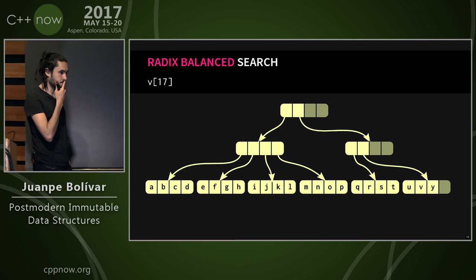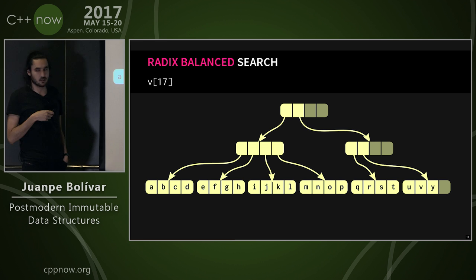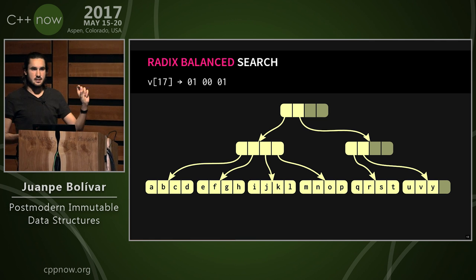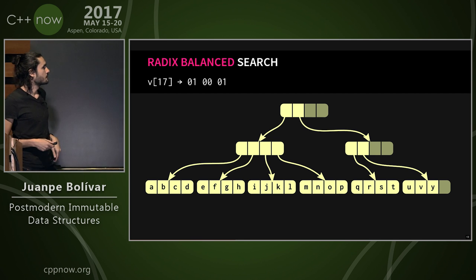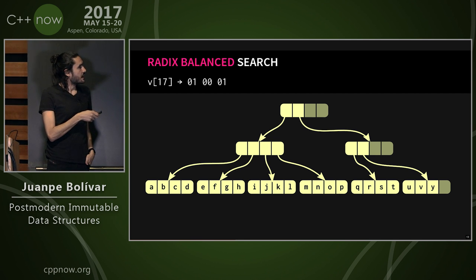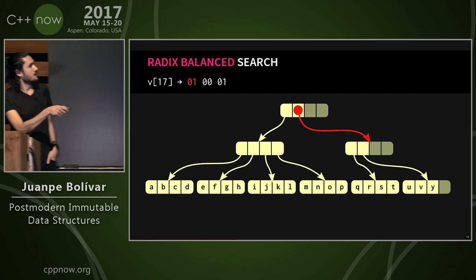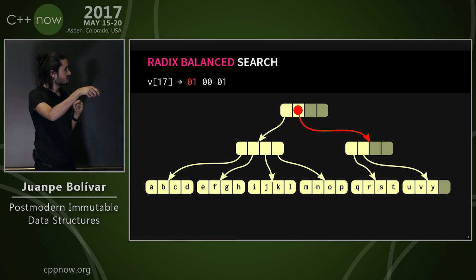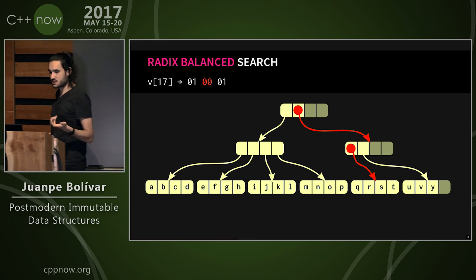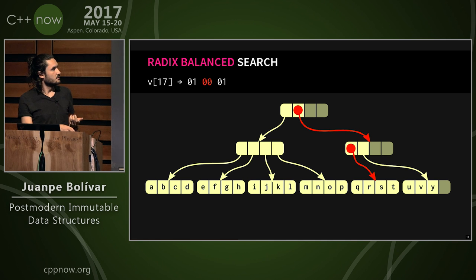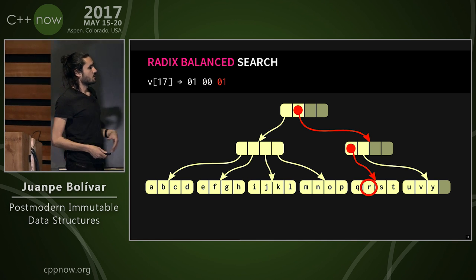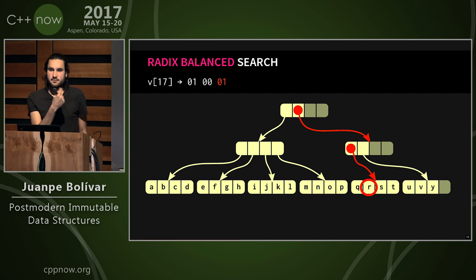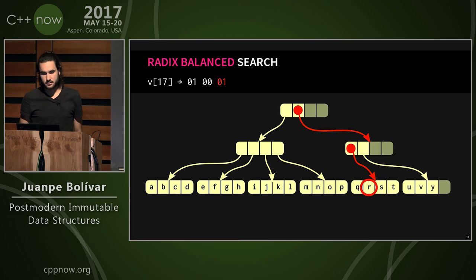To look up element at index 17, we split the index into groups of b bits (b being the exponent for the branching factor). We take the first group of bits, look up in the root node the corresponding slot, traverse down the tree to the next block, and recursively apply this operation. In the leaf chunk, we find the element in the second slot. This only requires simple bit shift and AND operations.